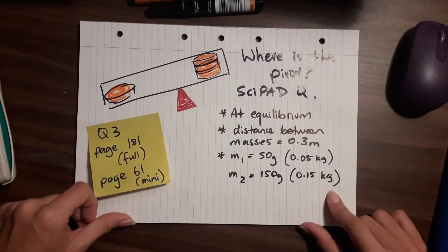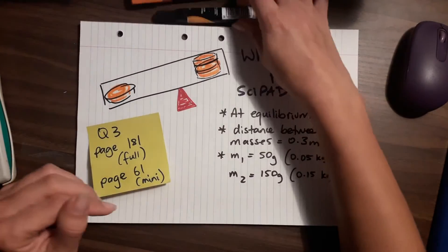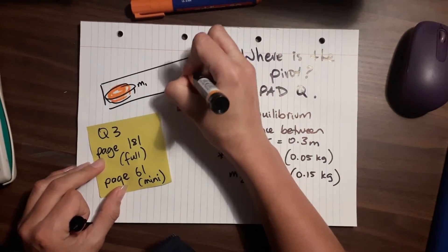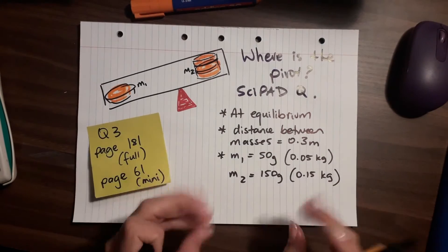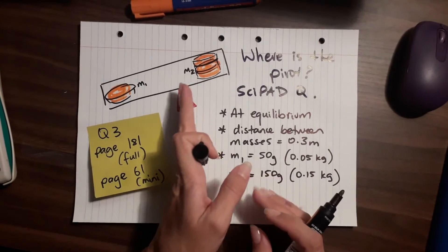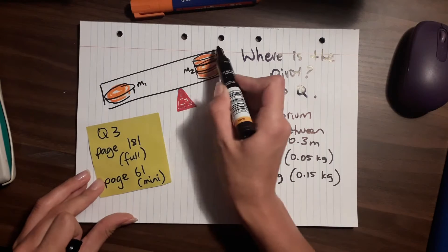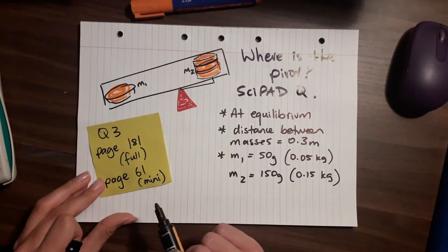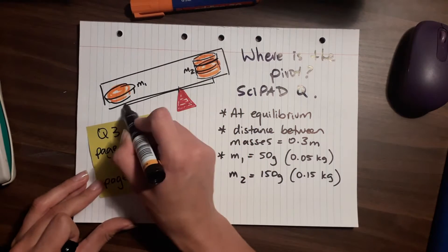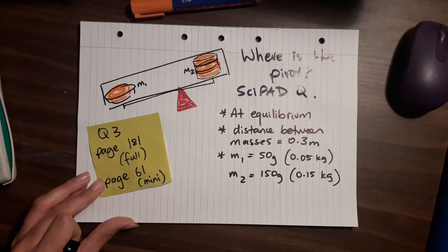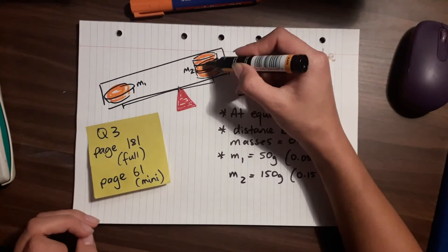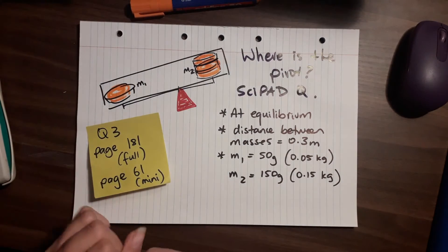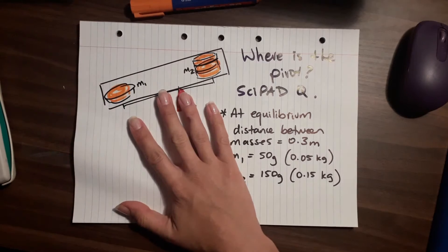I've labelled the masses M1 and M2. So this would be M1 and this would be M2. The question asks: where is the fulcrum? Where is the pivot? What's the distance from the pivot to the masses on each side? The centre of mass of each group of objects means it won't be quite at the end of the ruler.